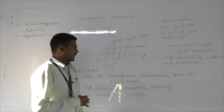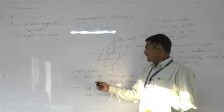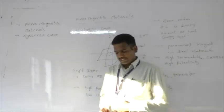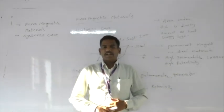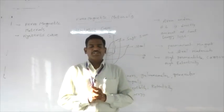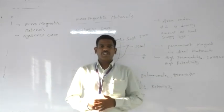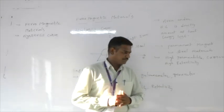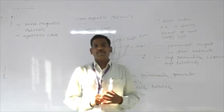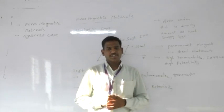This concludes the hysteresis curve and the different materials — soft iron and steel — used for different applications. With this, the topic of magnetic materials is complete. In the next session, we will start with the earth's magnetic property, that is, terrestrial magnetism, which is the last subtopic for magnetism. Thank you.